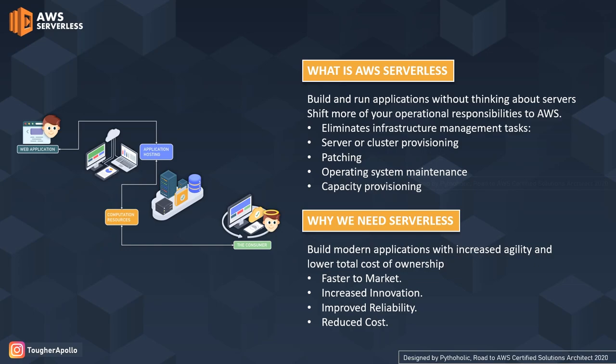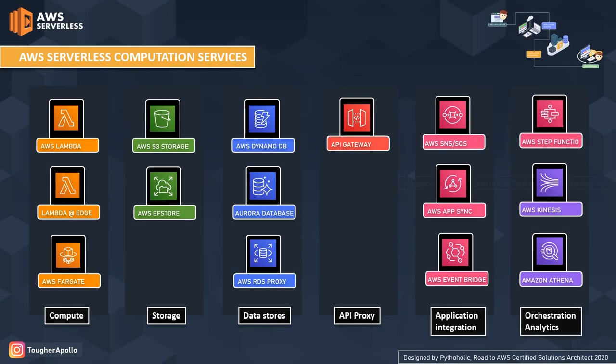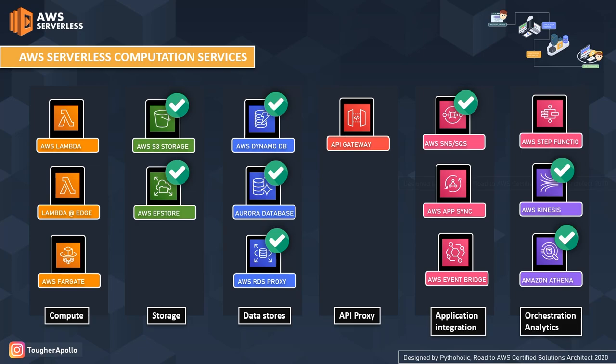With the evolution of AWS Serverless, it was initially restricted to serverless compute using AWS Lambda. But now AWS has expanded it across multiple services and domains — including compute, storage, data stores, API proxy, application integration, orchestration, and analytics. Some of these services we will discuss in depth, and others more conceptually we will discuss in brief.